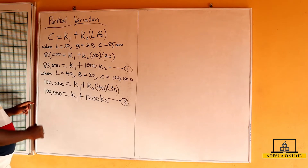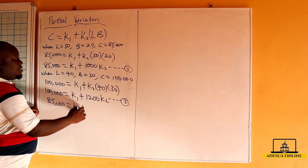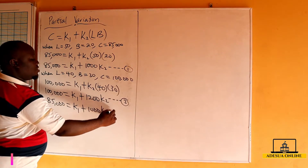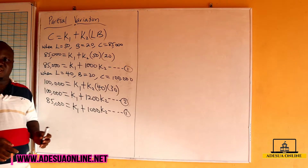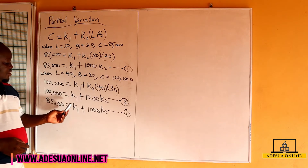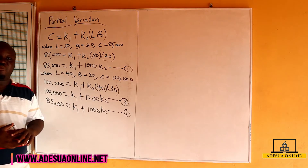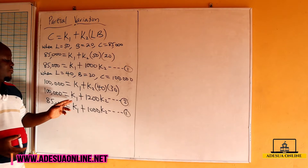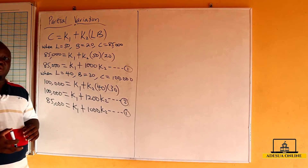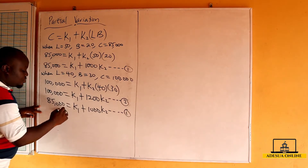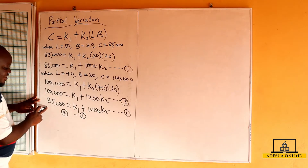Bringing equation 1 down: 85,000 = K1 + 1000·K2. We are going to solve these two equations simultaneously using the elimination method. Subtracting equation 1 from equation 2: 100,000 minus 85,000 gives us 15,000.